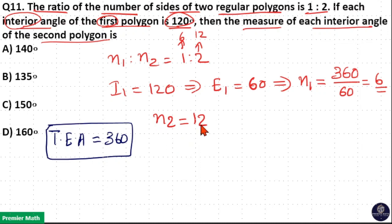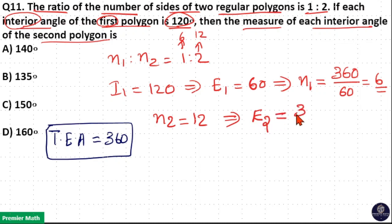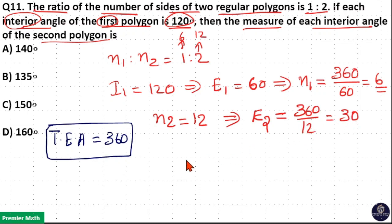If the number of sides of the second polygon is 12, the exterior angle of the second polygon is equal to 360 divided by 12, which is equal to 30 degrees. That is, total exterior angle divided by number of sides equals 30 degrees.